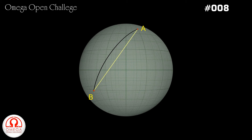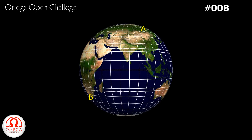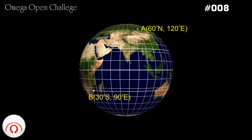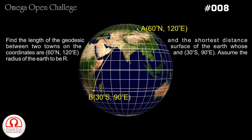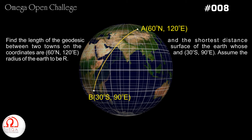Our Earth is also a sphere. Let there be two points on the surface of the Earth whose coordinates are 60 degrees north, 120 degrees east and 30 degrees south, 90 degrees east. The challenge this week is to find the shortest distance and the length of the geodesic between these two points, assuming the radius of the Earth to be r.